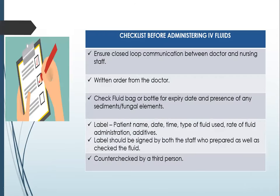Before administering any IV fluids, ensure a closed-loop communication between doctor and nursing staff. There must be a written order from the doctor. Staff needs to check the fluid bag or bottle for expiry date as well as for the presence of any sediments or fungal elements. All IV fluids need a label containing the patient name, date, time, type of fluid, rate of fluid administration, and any additives. For example, in dextrose 5% and dextrose 10%, after 48 hours we start adding electrolytes in the form of CRL and K-sol, so additives must be written on the label. Labels should be signed by both the staff who prepared and checked the fluid, and all IV fluids should be counter-checked by a third person.